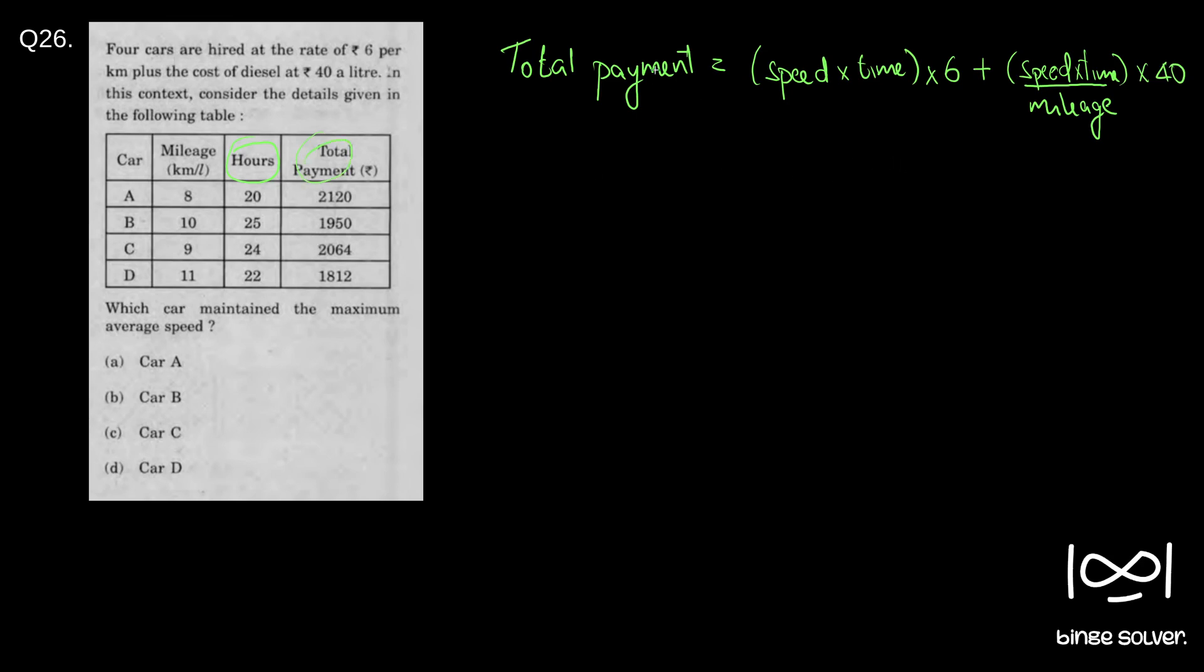We will use this equation to solve the speed of each car. For car A, total payment is 2120 equals speed A into time 20 into 6, plus A into 20 by mileage 8 into 40. We can cancel out 20 throughout, so this becomes 106, and 40 by 8 becomes 5. This becomes 6A plus 5A which is 11A equal to 106. It implies A is equal to 106 by 11 which comes around 9.6.